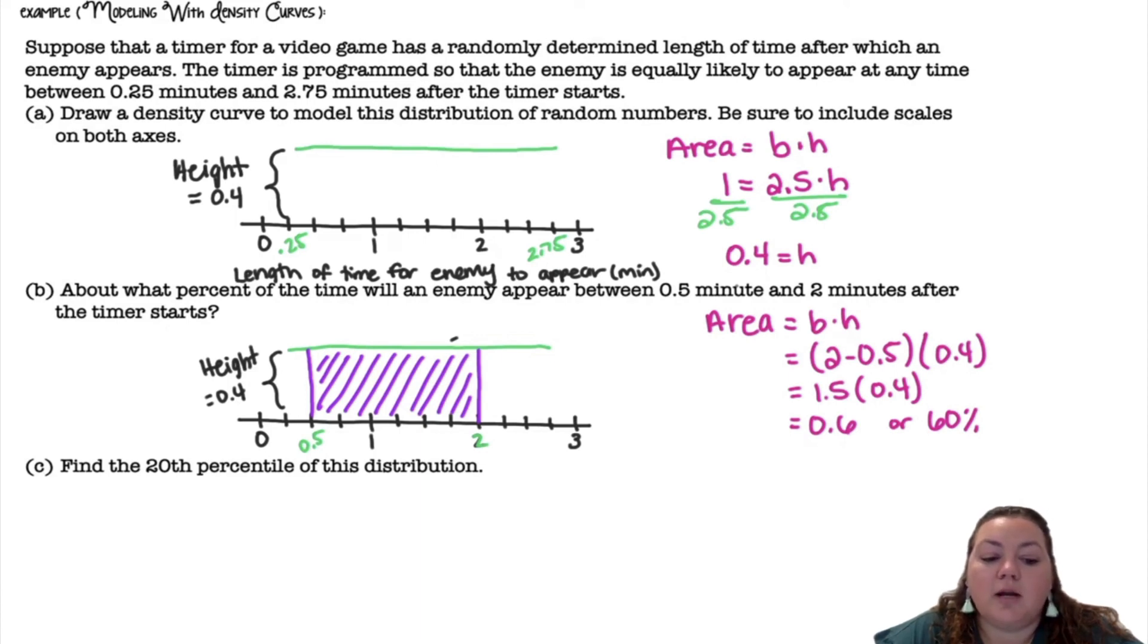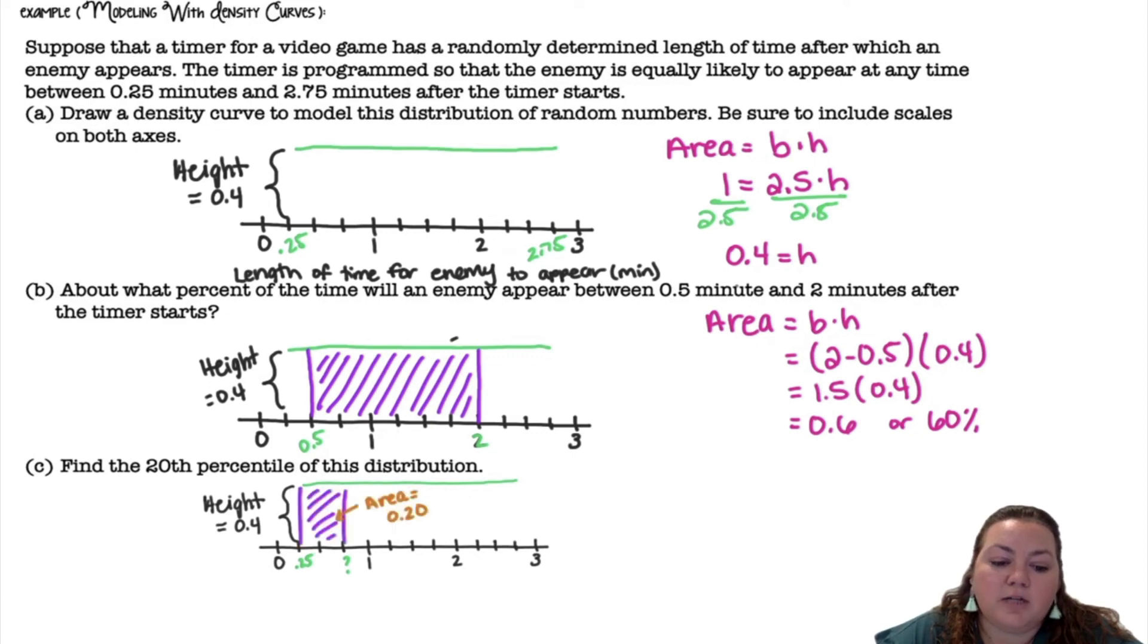Find the 20th percentile of this distribution. The percentile is the percent of values that are less than that number. So I'm trying to figure out like I have 20% shaded, what is that number that it's going to, marked with a question mark.